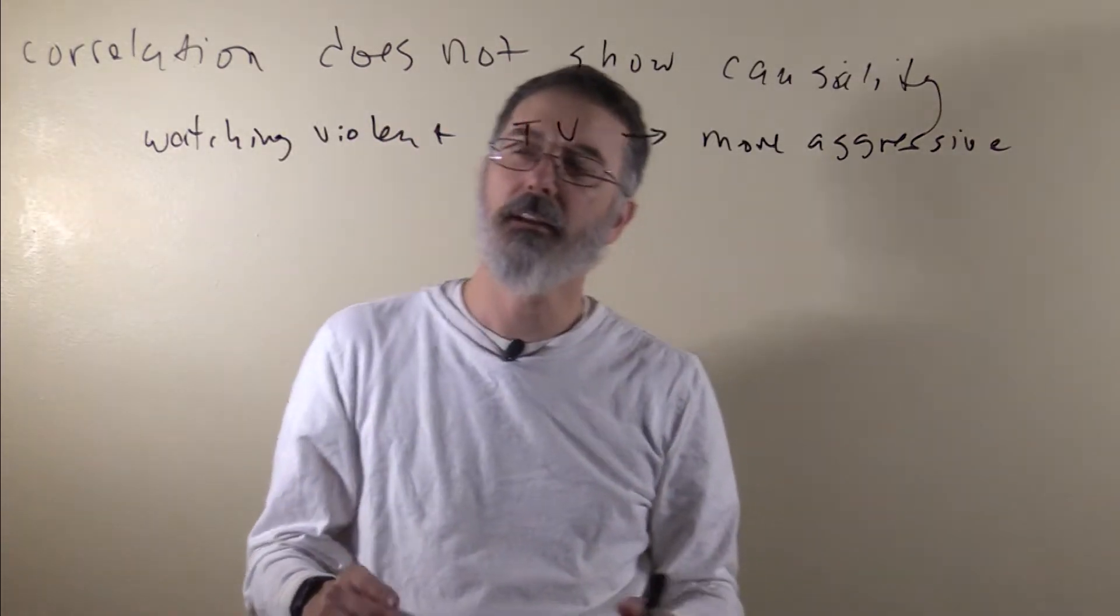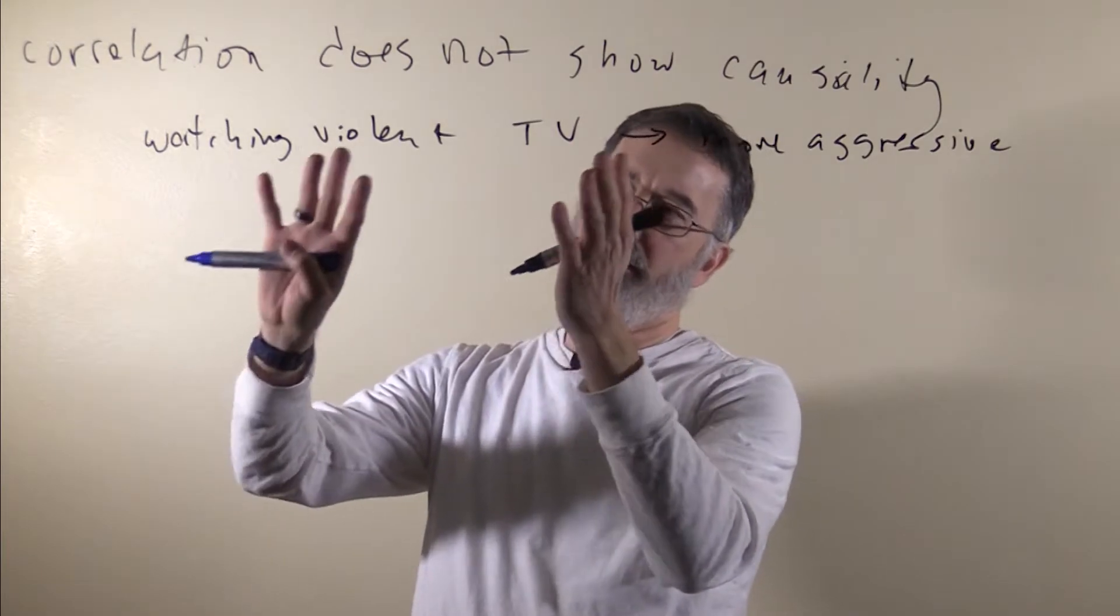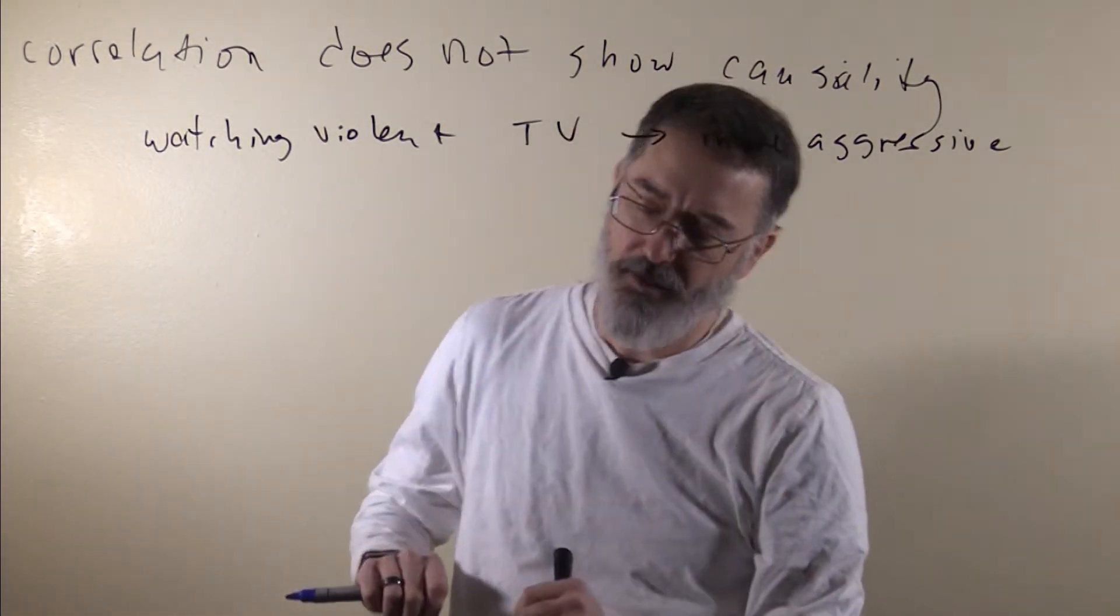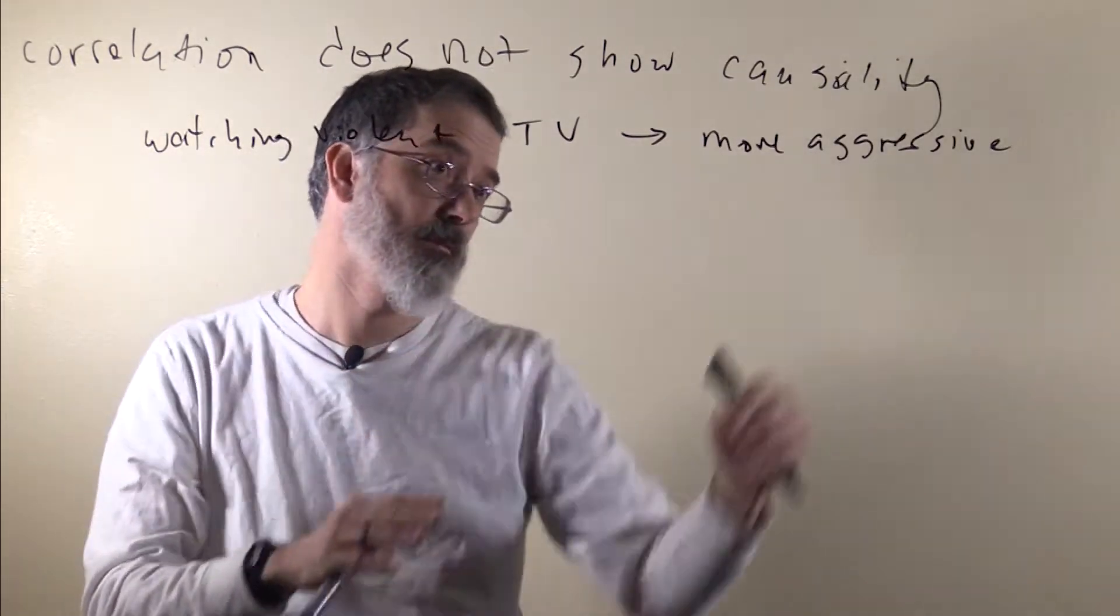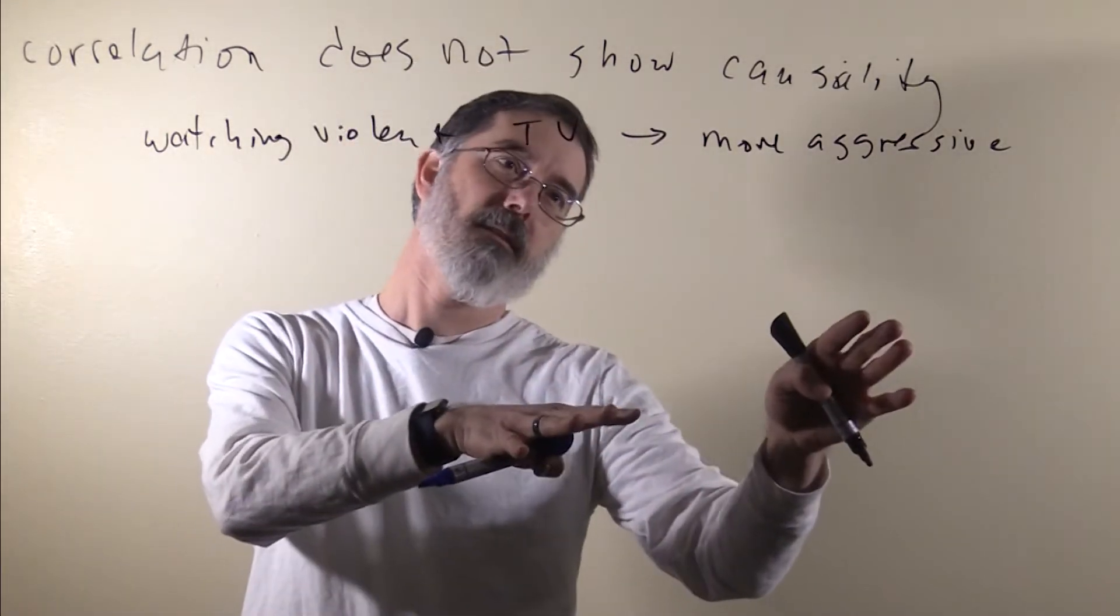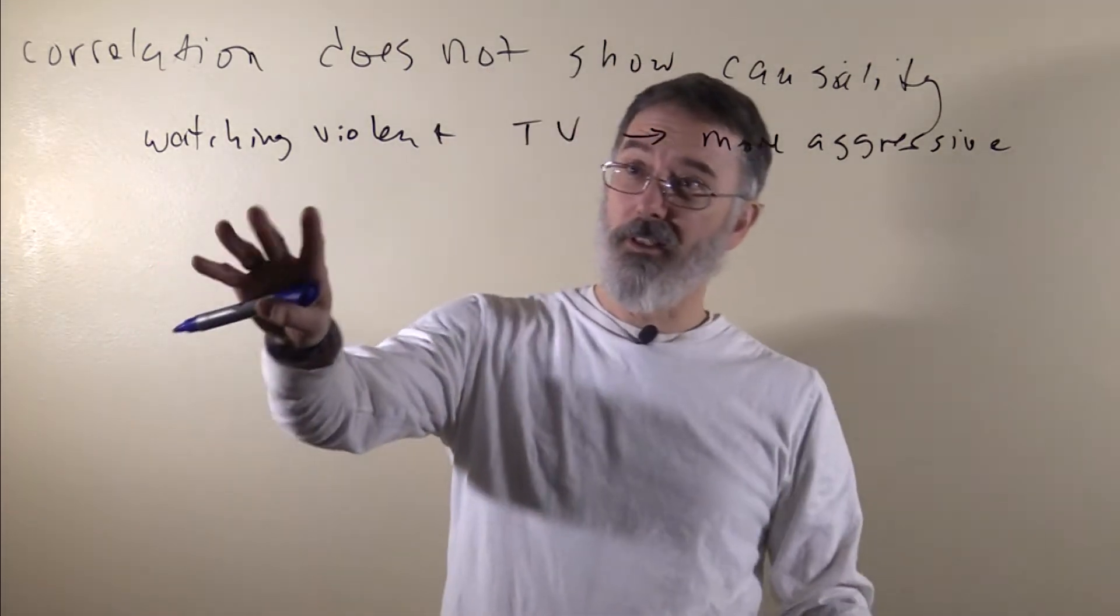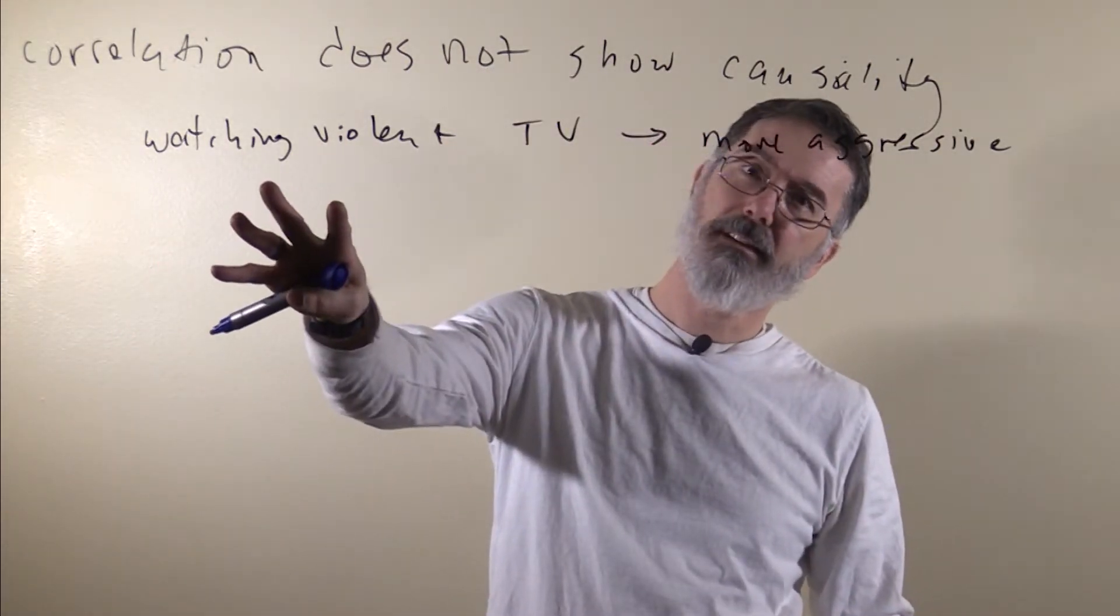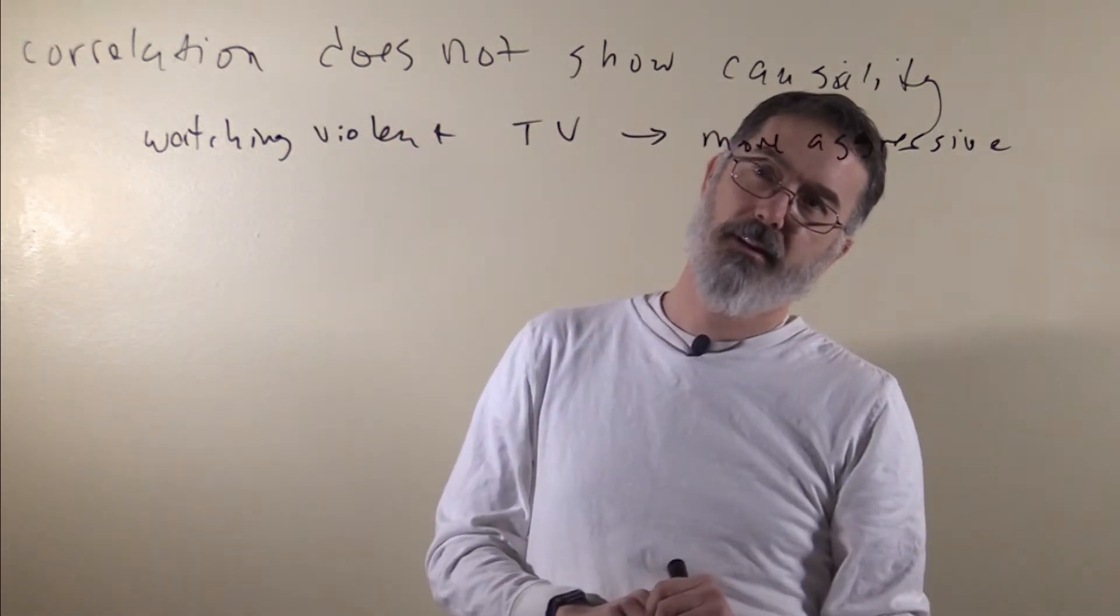What you might do in a study is you might ask some kids' parents how much do those kids watch violent TV. Some kids watch a lot, other kids do not watch very much, and then maybe you will observe the kids interacting with other kids and you measure how aggressive they are. What if you find there is a positive correlation where the kids who watch more violent TV are the most aggressive kids, and the kids who watch the least violent TV are the least aggressive kids.